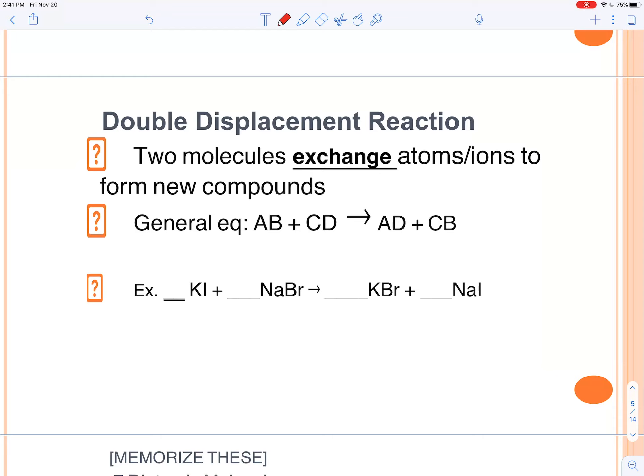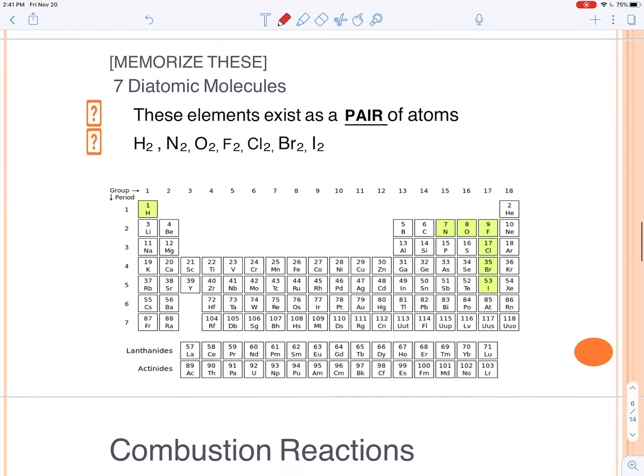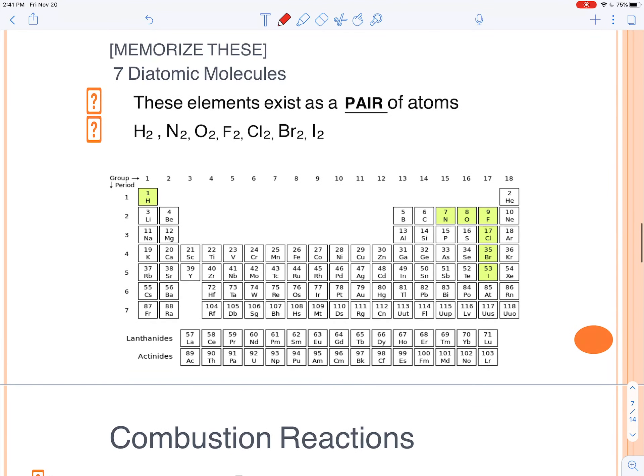In double displacement, they exchange ions here. So potassium and sodium switch places and now they've got different ions. So potassium is now bonded with bromine, sodium is bonded with iodine. This one's already balanced so we don't have to go through that.